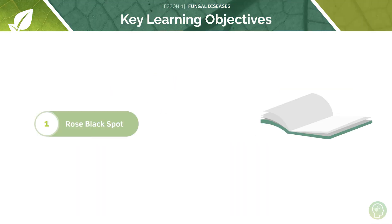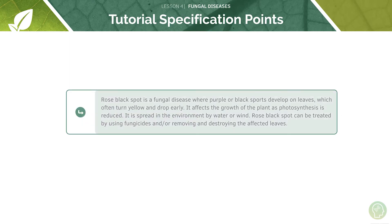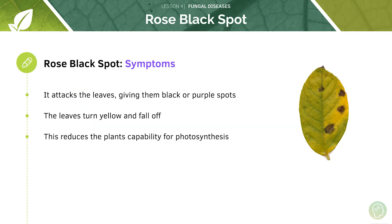We're looking at just one type of fungal disease today, so it's a fairly simple tutorial, and that's going to be rose black spot. Rose black spot is a fungal disease that attacks the leaves of plants — commonly roses, as is obvious from the name, but also some other types of plants. The attacking of the plant by this fungus gives them black or purple spots, and the leaves subsequently turn yellow and fall off.